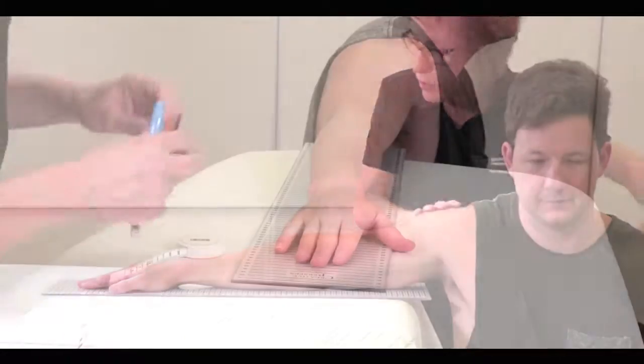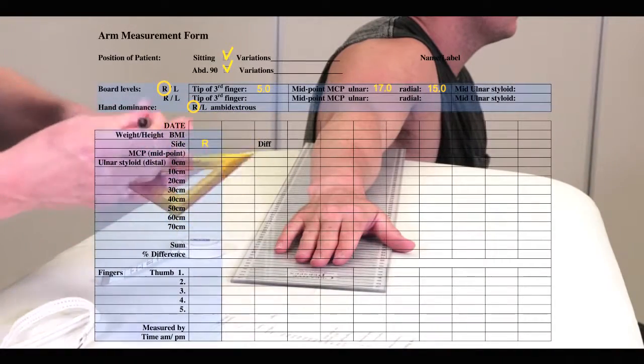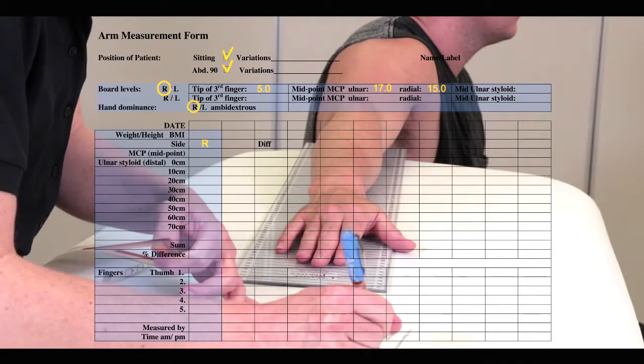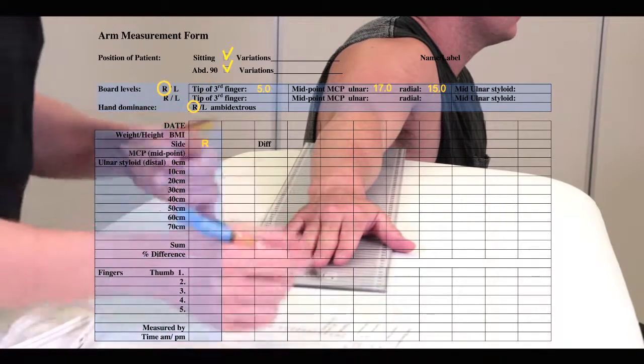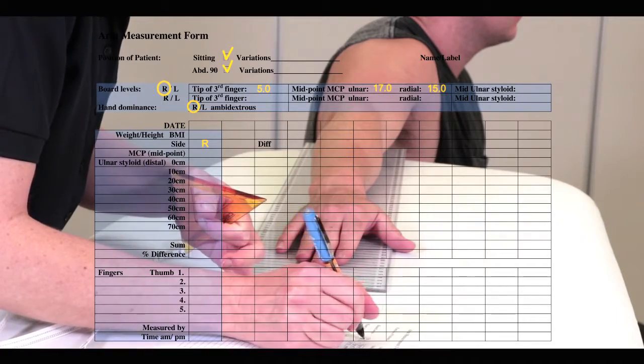Mark this or any variation on the arm measurement form. It is recommended to measure the at-risk arm first. When you measure the unaffected arm later, use the same position as for the affected arm.